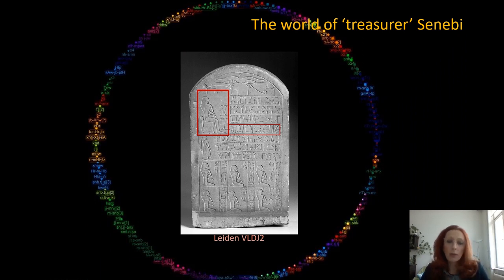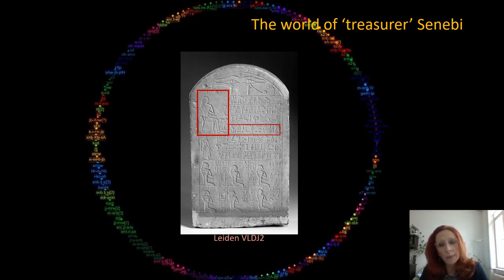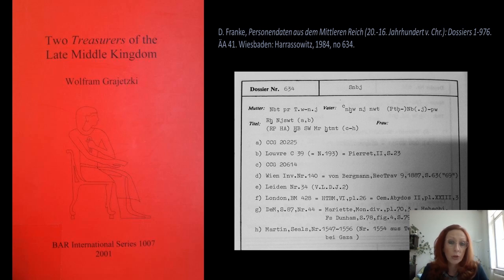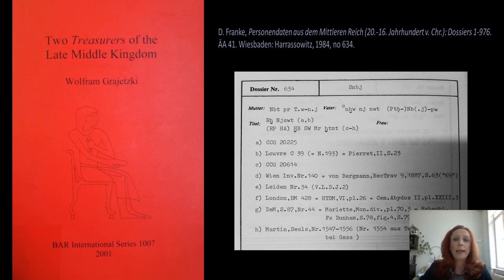The present lecture focuses on the network of treasurer Senebi, one of the best-attested and most influential individuals who worked under Neferhotep I and Sebekhotep IV, rulers of the 13th dynasty. The monuments featuring treasurer Senebi are assembled and analyzed in a seminal study by Wolfram Graetsky, 'Two Treasurers of the Late Middle Kingdom.' Based on the preserved data, Senebi appears on eight stelae, on six as treasurer. His stelae predominantly attest his peers and subordinates, providing a rich corpus of data for creating his social network.